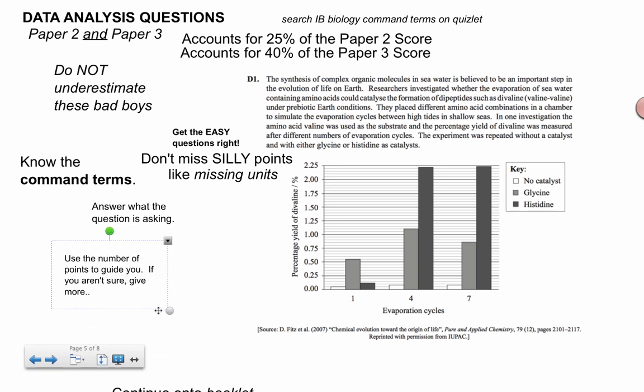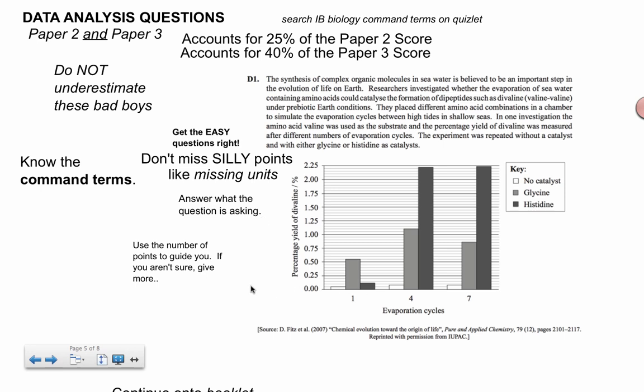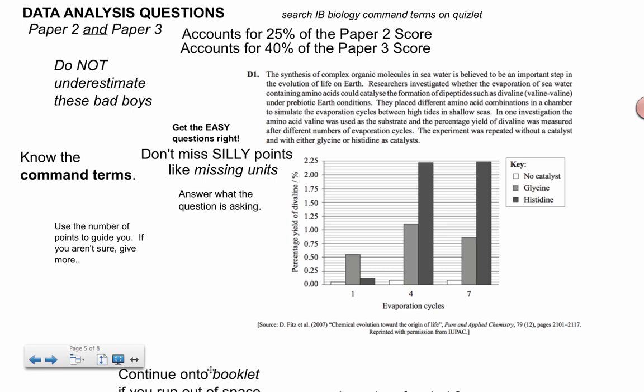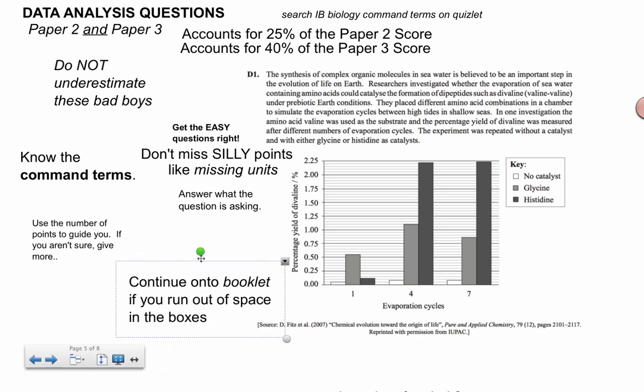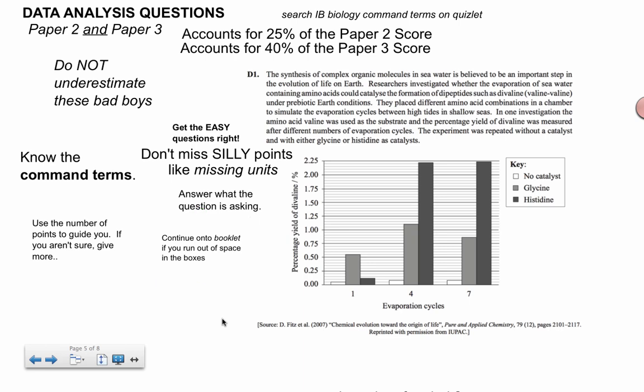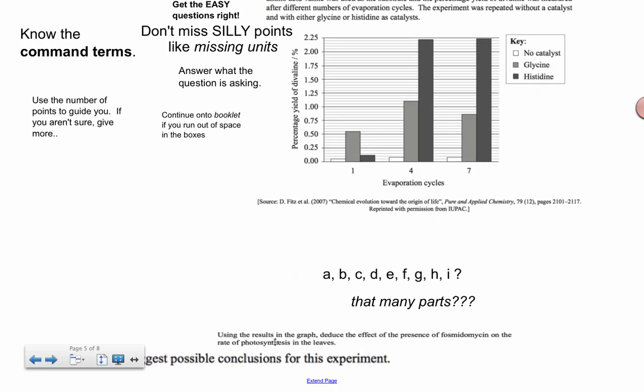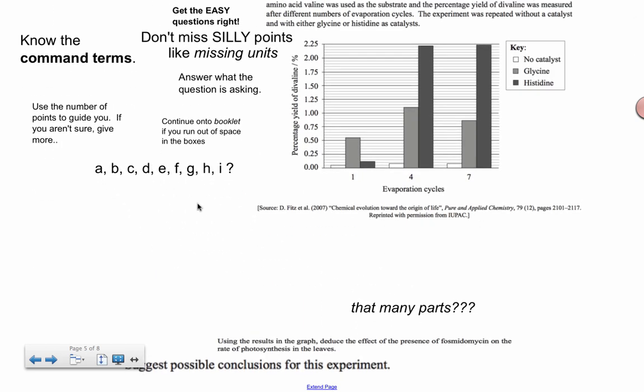Use the number of points to guide you. If it's one point, then it's probably about reading off a number here. But if you don't get the units, you don't even get that point. So use the number of points to guide you. If you run out of space, I said this earlier for the other parts, you can continue on to the booklets.